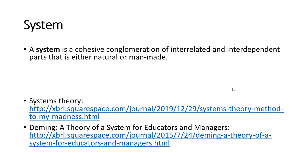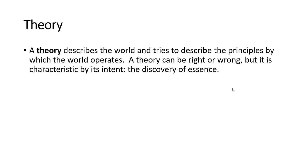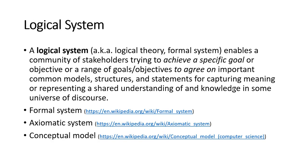Logic is thinking according to a set of consistent and coherent rules. A theory describes the world — it tries to describe the principles by which the world operates. A theory can be right or wrong, but the point is to get at the essence of the system that you're trying to describe. You combine these things together and you have the notion of a logical system.